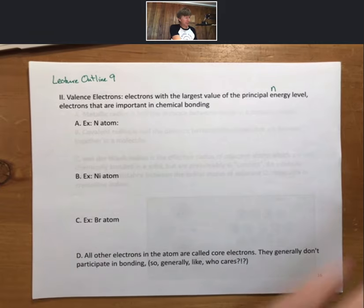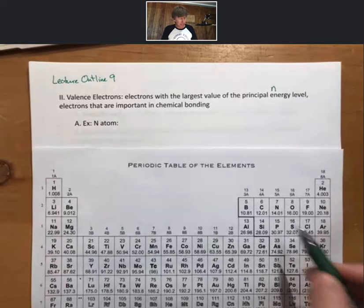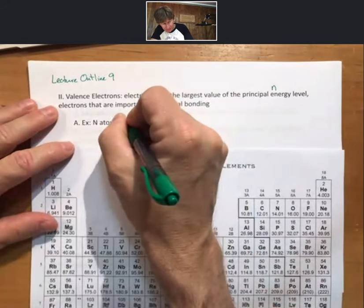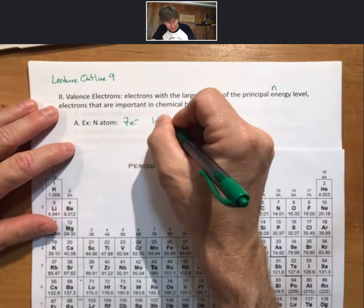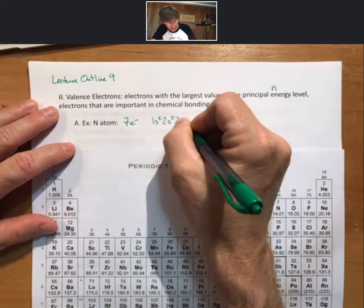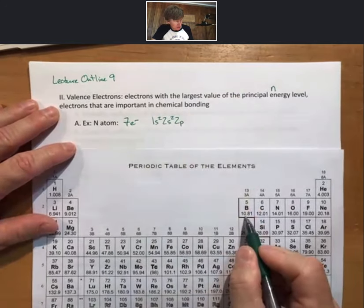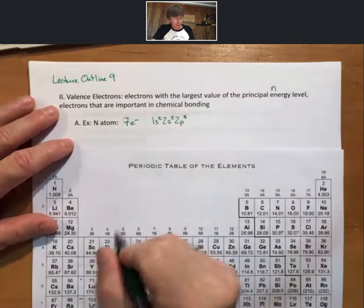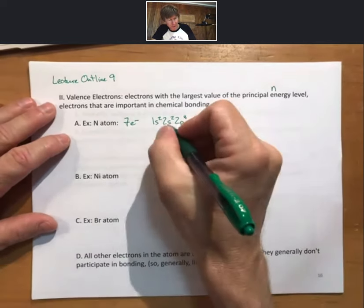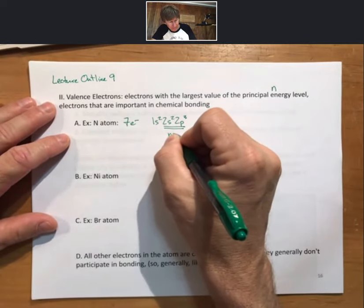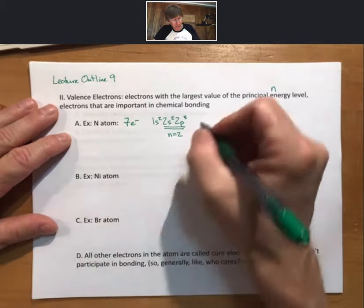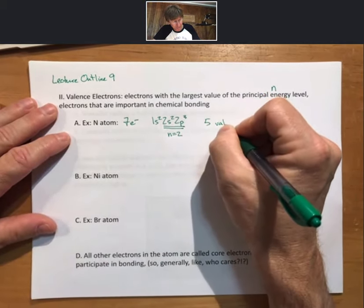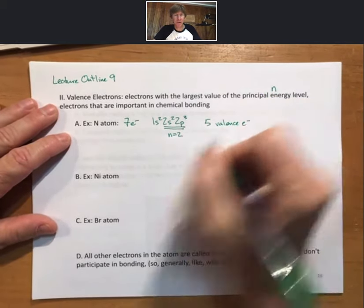For the nitrogen atom, it's element number seven. There are seven electrons. I have four electrons, 2p3. The valence electrons are going to be electrons with the largest value of the principal energy level. That's n equals 2, and there are five valence electrons.